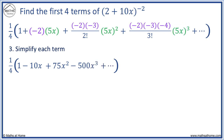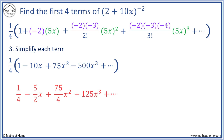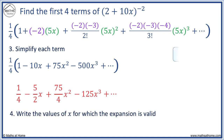Now we have simplified. We just need to multiply each term in the brackets by 1 quarter. 1 times 1 quarter equals 1 quarter. Minus 10x times a quarter equals minus 5 over 2 x. 75x squared times a quarter equals 75 over 4 x squared. And minus 500x cubed times a quarter equals minus 125x cubed. This is our simplified binomial expansion for (2 + 10x) to the power of minus 2. It is only valid for x values between minus 1 and 1.